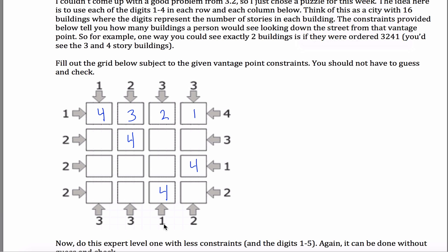Now I want to look for the threes — they give you a lot of information. For this three clue, I have a one and a two left over that have to go in this column somewhere. This four is blocking the three, so I'm only seeing this one building so far. I'd have to put my one here and my two here, because if I put my two here and my one here, the two would block the one and I wouldn't see enough buildings.